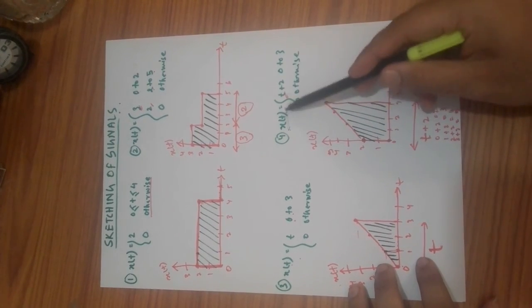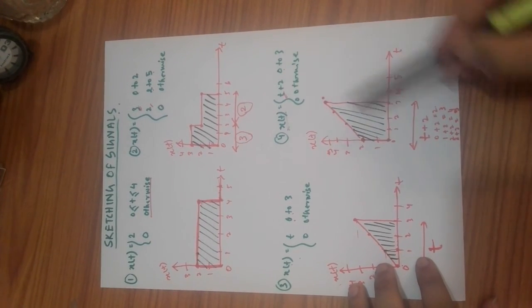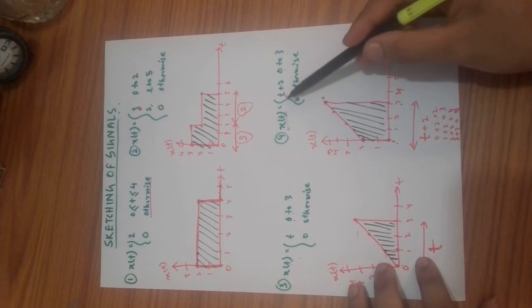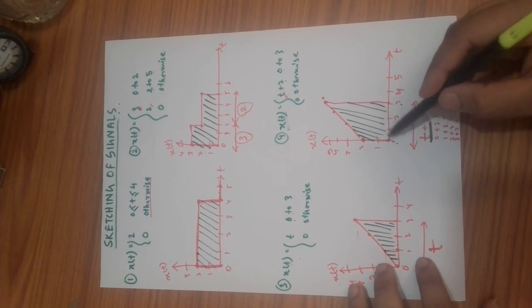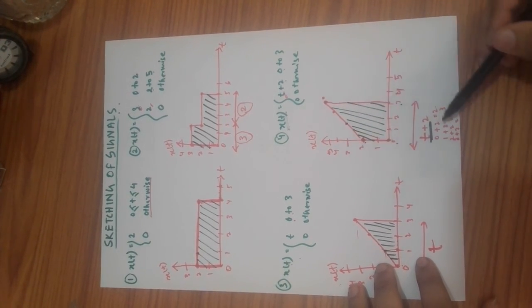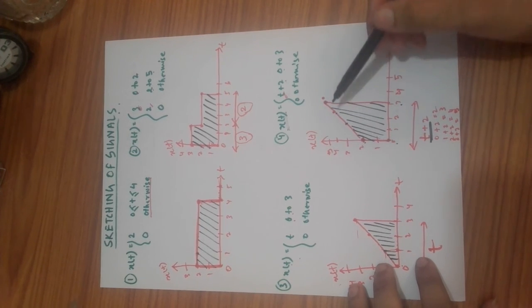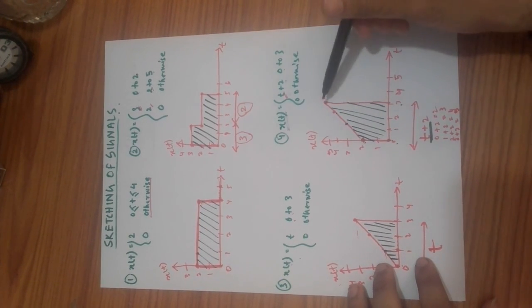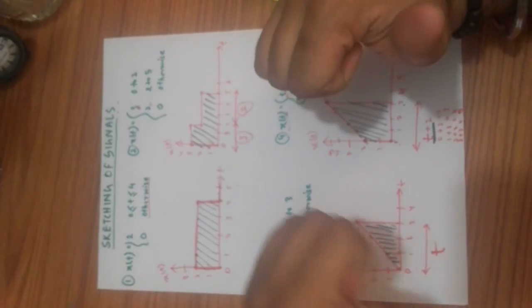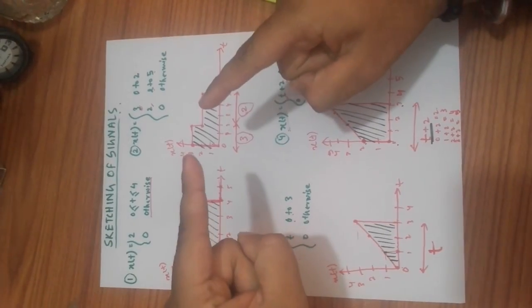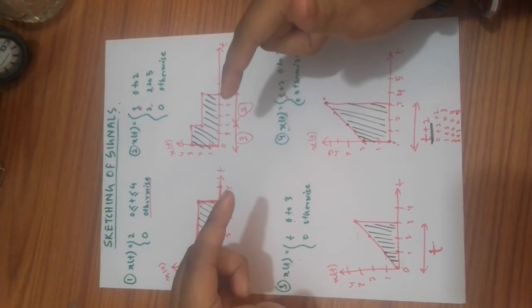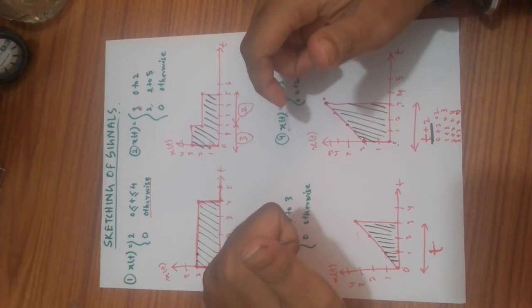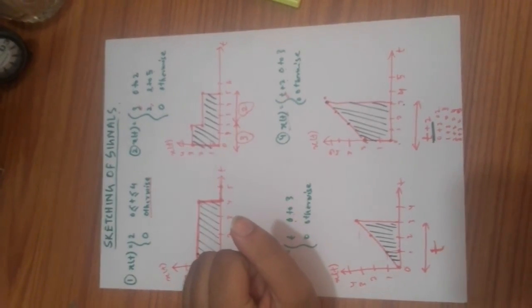So to summarize: x(t) varies from 0 to 3, amplitude is t plus 2. At t=0 it is 2, at t=1 it is 3, at t=2 it is 4, at t=3 it is 5 — join the dots. Best of luck! We'll meet in the next video about reflection of signals — how to draw signals that are reflecting. Thank you.